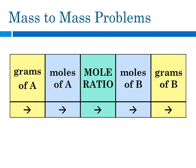For a mass-to-mass problem, you're going to be given grams of something, and you're going to have to go to moles using molar mass. Then you will use your mole ratio to get from moles of what you were given to moles of what you are asked for. And then going from moles to grams again, you have to use molar mass.